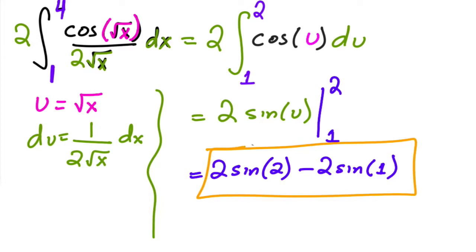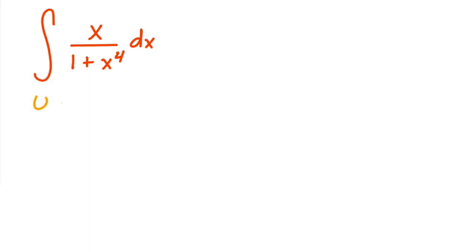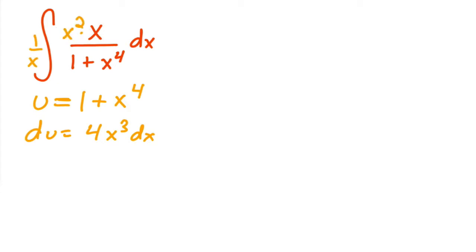Now we're getting into the really challenging ones — integration by substitution. Notice that our usual rules don't apply here. Our instincts say let u = 1 + x⁴, but then du = 4x³ dx, and you don't have x³ in the integrand. You can't just multiply by x² and divide by x² — you cannot take variables outside the integral. That's not allowed.